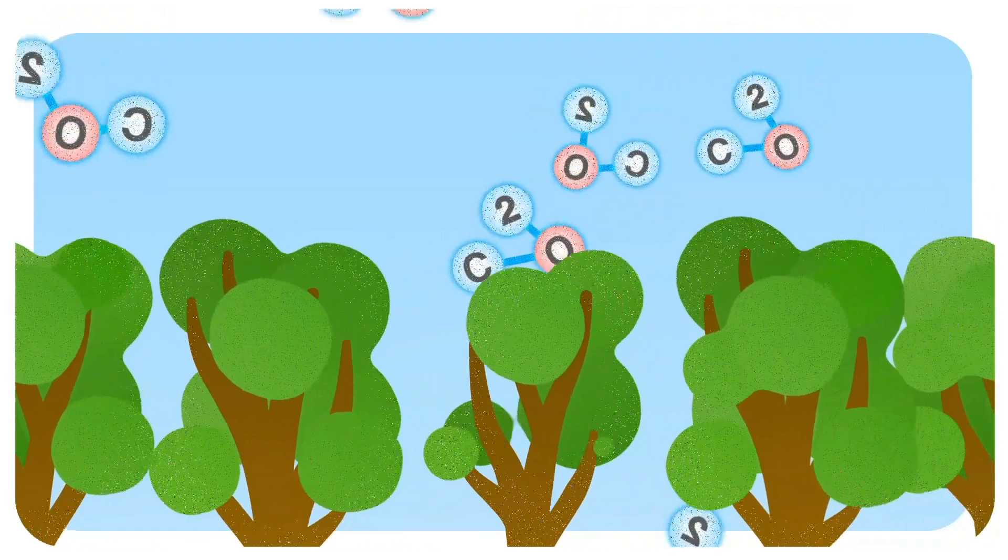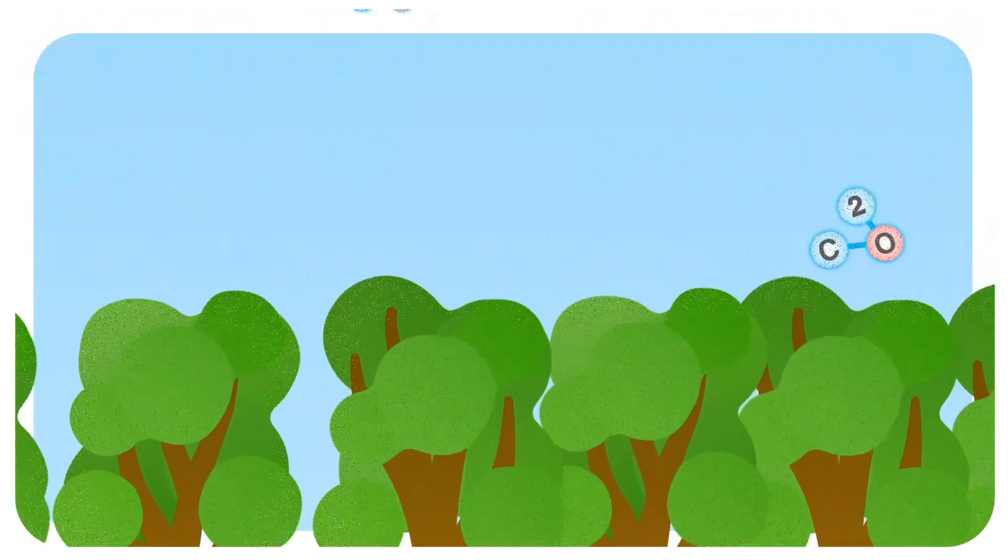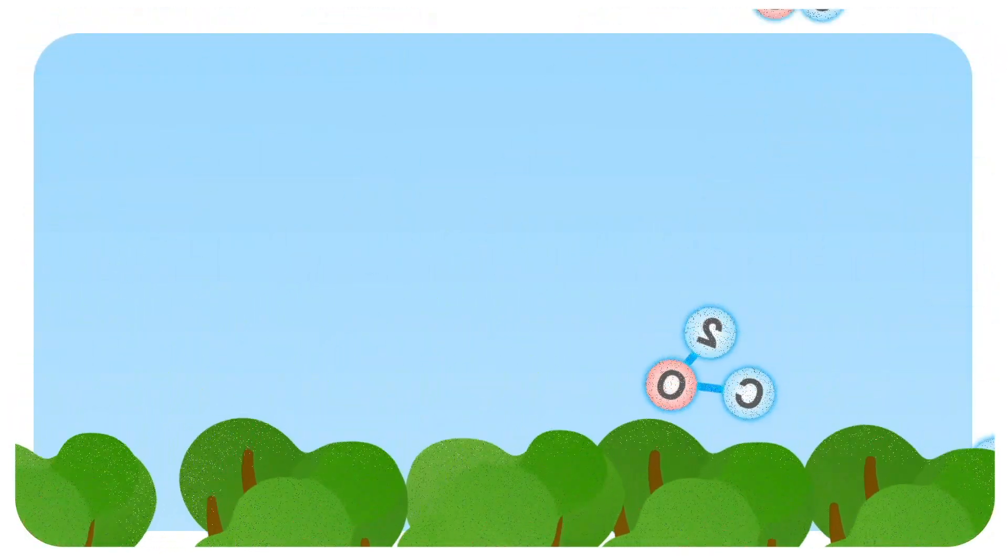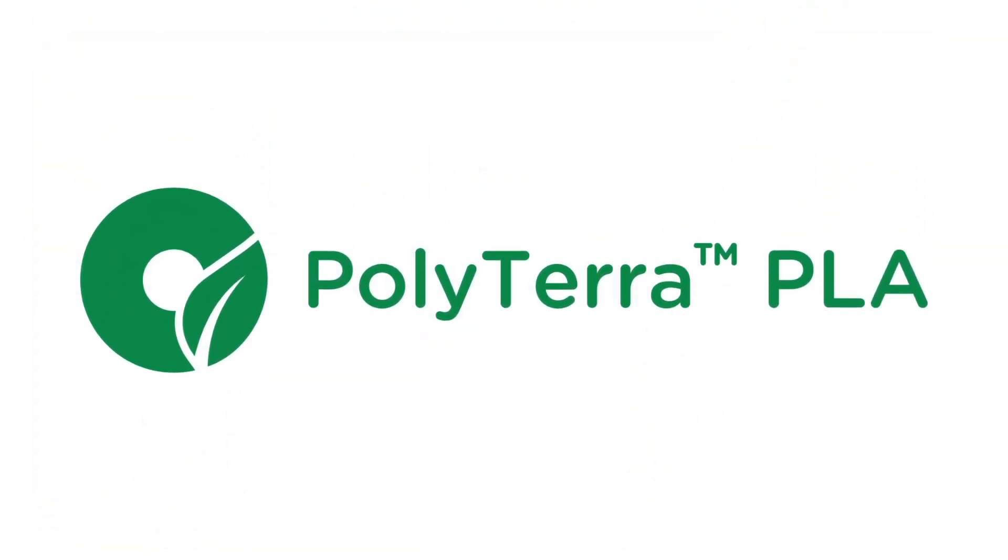Once this tree hits maturity, it can suck in 22kg of carbon dioxide each year, with a potential lifespan of hundreds of years, making Polyterra PLA a truly carbon negative product.